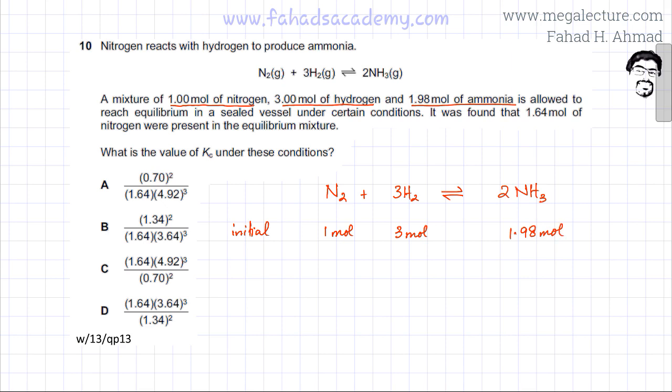Once they've been added in the sealed vessel, forward reaction or backward reaction would occur. If more forward reaction occurs, the amount of reactants decreases and the amount of products increases, and vice versa. An equilibrium would be set up, and eventually a time would reach when the rate of forward equals the rate of backward reaction. Now once the equilibrium has been reached, it was found that 1.64 moles of nitrogen were present in the equilibrium mixture.